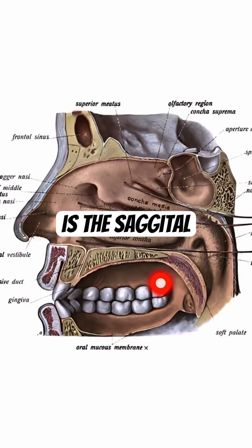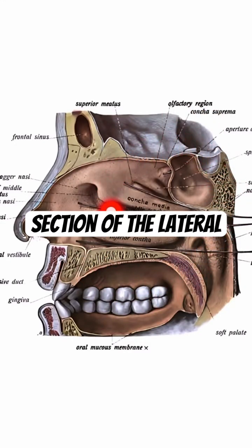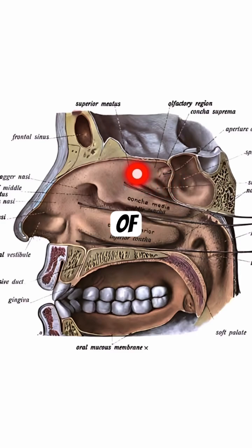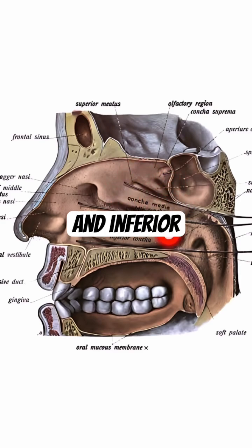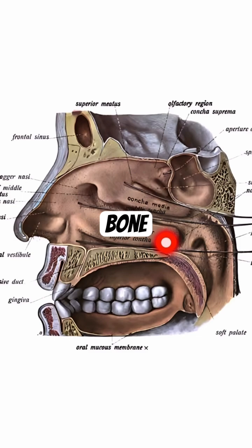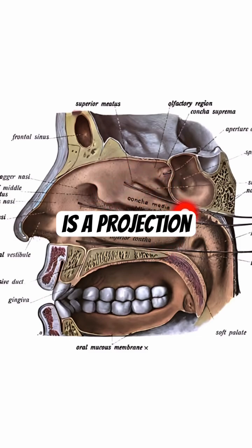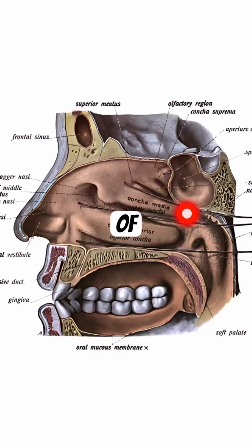This is the sagittal section of the lateral wall of the nose. It is composed of the superior concha, middle concha, and inferior concha. The inferior concha is a separate bone, whereas the superior concha and middle concha are projections of the ethmoid bone.